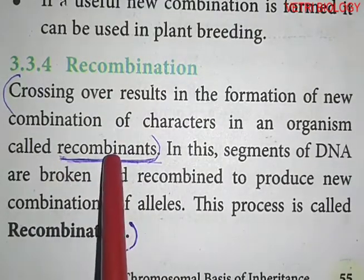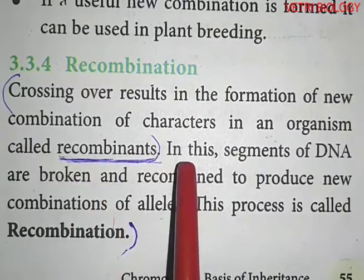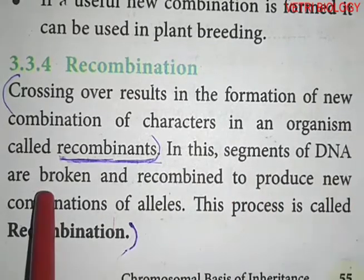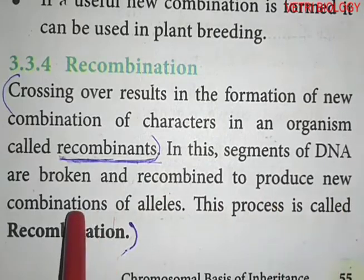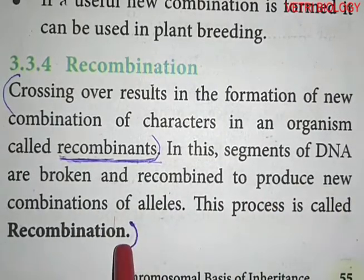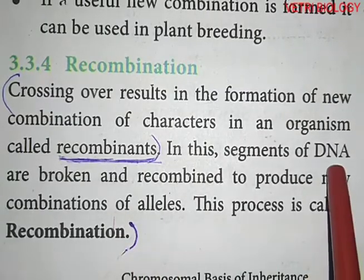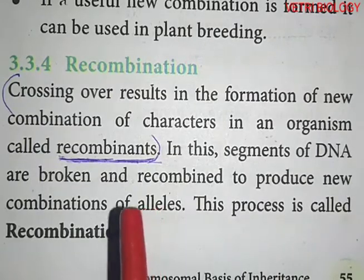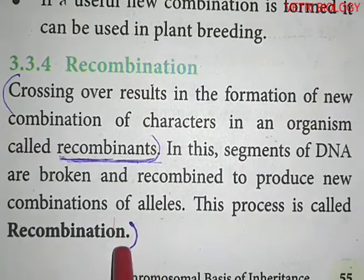In crossing over, new combinations of characters are formed in organisms called recombinants. Segments of DNA are broken and recombined to produce new combinations of alleles. This process is called recombination.